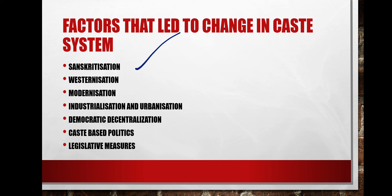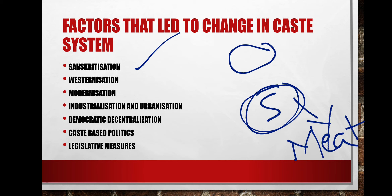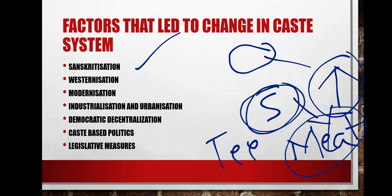Several factors have led to changes in the caste system in India. The first is Sanskritization — when a lower-caste person imitates the ideas and patterns of upper-caste people. For example, if a Shudra stops eating meat, stops drinking alcohol, or dresses like a Brahmin, they are trying to imitate the Brahmin and thereby gain social mobility. This imitation is called Sanskritization, and its increase has led to changes in the caste system.